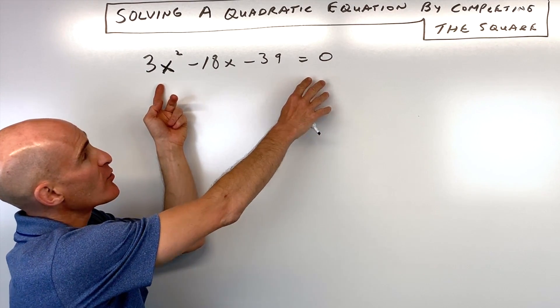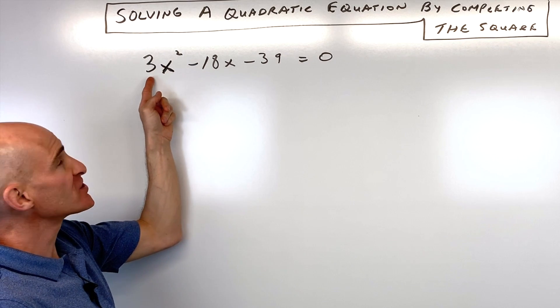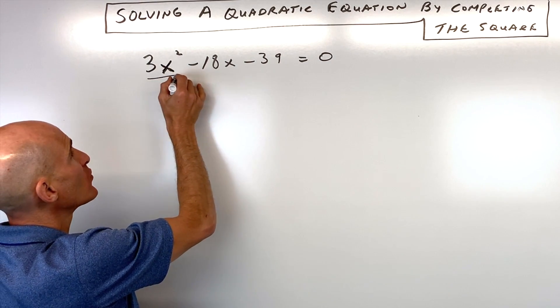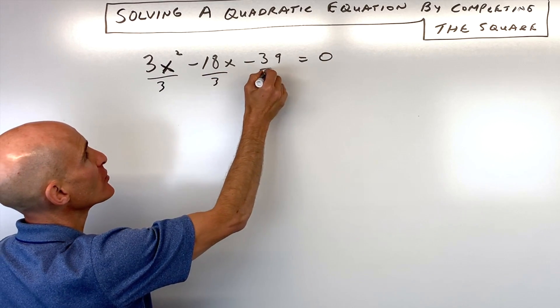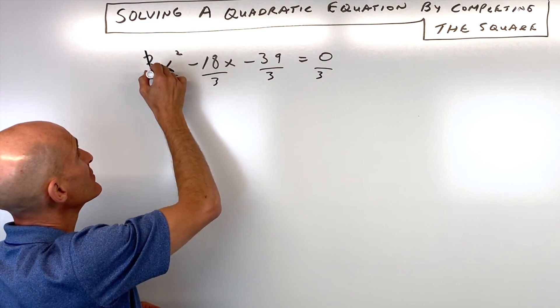So, we're given this equation right here, and we want to solve by completing the square. But notice how we have that leading coefficient that's not 1. So what I recommend you do is make sure this leading coefficient is 1. We're going to divide everything by 3 to keep the equation balanced. This will make it easier to complete the square.